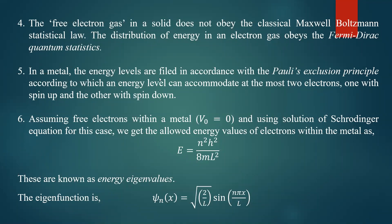Fifth postulate: in a metal, the energy levels are filled in accordance with the Pauli exclusion principle, according to which an energy level can accommodate at most two electrons — one with spin up and the other with spin down. So every energy state can accommodate only two electrons, and the Pauli exclusion principle must be obeyed.